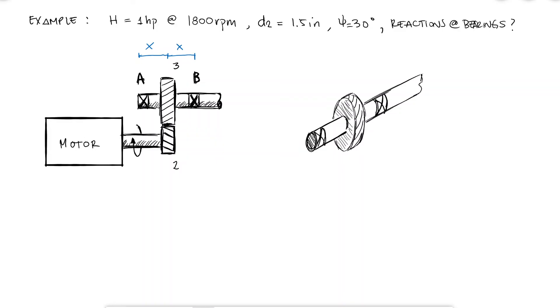And from what we learned today and in the previous video, the one component we can calculate right off the bat with the power and the rotation speed information is the tangential force that gear 2 exerts on gear 3.